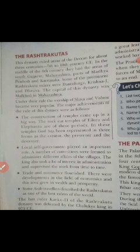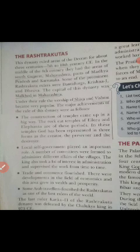The Rashtrakuta dynasty ruled the area of the Deccan for about 3 centuries, from the 7th to 10th century. In the middle of the 8th century, they had control over the areas of South, Gujarat, Maharashtra, part of Madhya Pradesh and Karnataka.